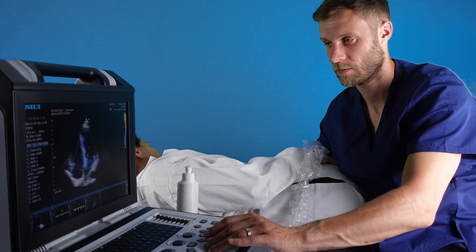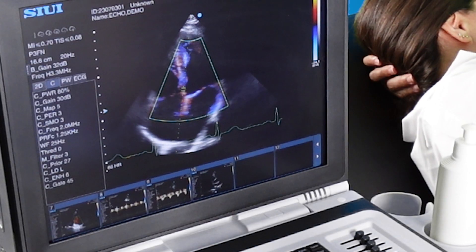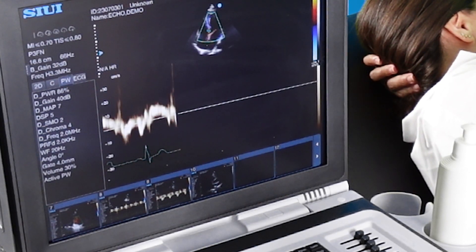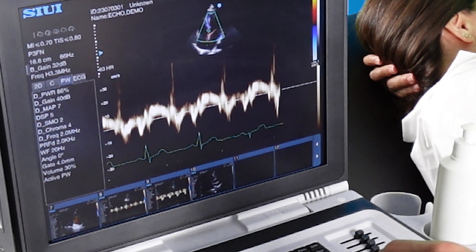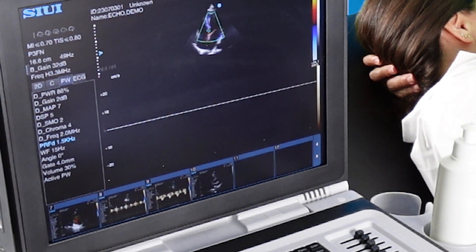Tissue Doppler: move over to the septal hinge point and place your pulse wave gate just above it. Make sure you optimize your scale to fit all of the waveform in.